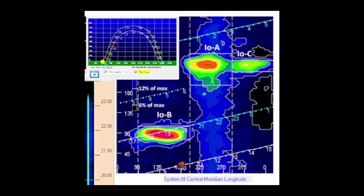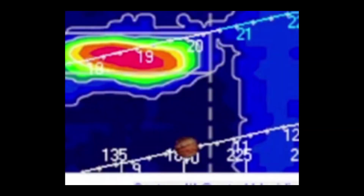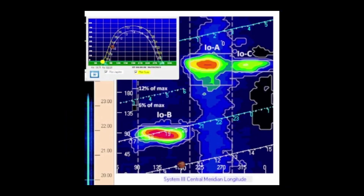The brown dot locates the position of Jupiter in relation to its moon Io. Red patches on the chart indicate the highest probability of seeing a Jupiter storm. High probability passes do not always result in seeing a storm, due to many factors other than just the location of Io.